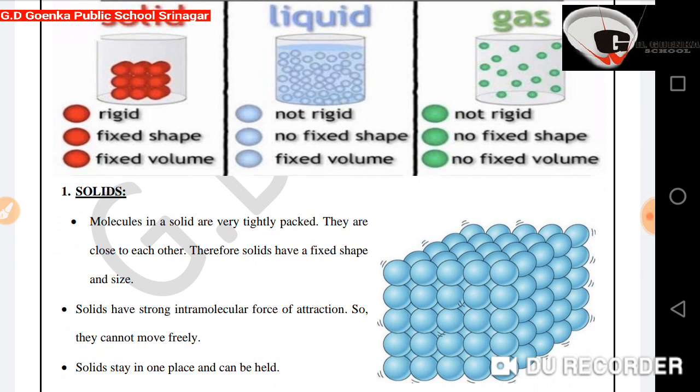Solid: rigid, fixed shape, fixed volume. Liquid: not rigid, no fixed shape, fixed volume. Gas: not rigid, no fixed shape, no fixed volume.